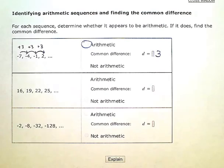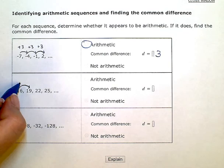Because I'm adding 3 every time. So let's look at this one. To get from 16 to 19, I would have to add 3.